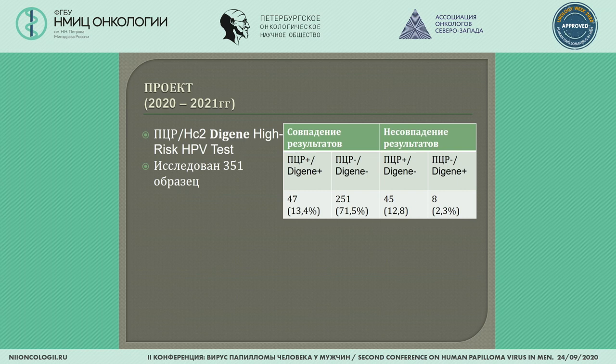Why the discrepancy? In the Digene system, we have 68 types of HPV, and some types are not included in the PCR panel. This could be connected with the transitory nature of the virus. Eleven viruses are always detected at minimal numbers.